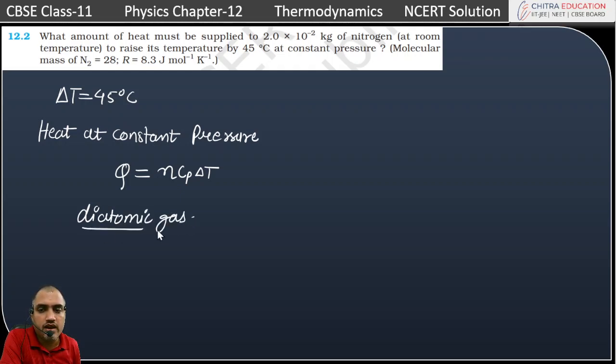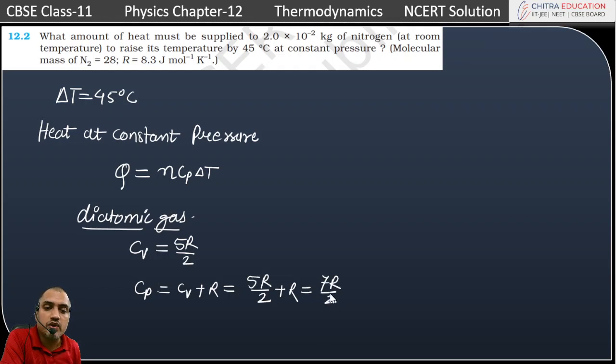If we talk about Cv, then it is 5R/2. And if we talk about Cp, then it will be Cv + R. That means 5R/2 + R, that is equal to 7R/2.